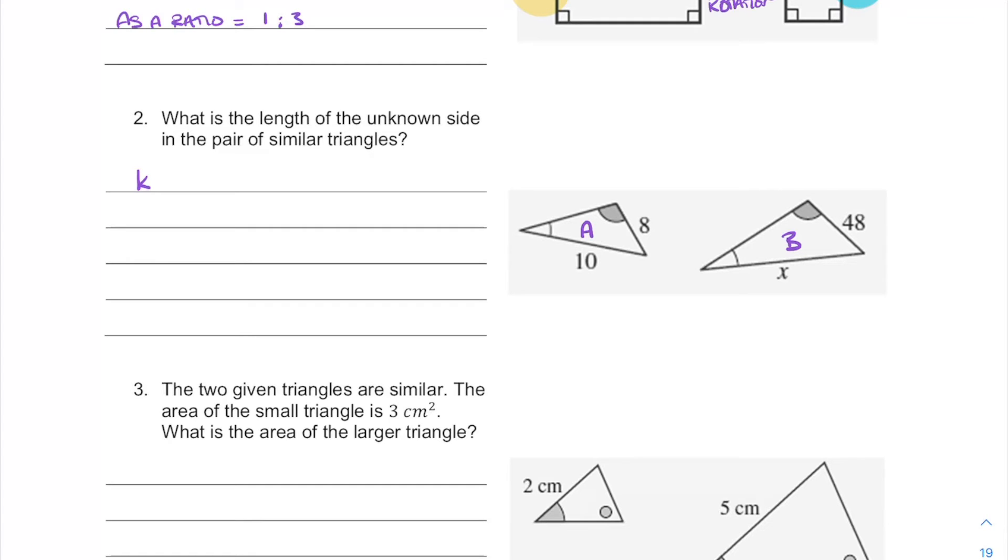Is going to be shape b over shape a. So this time we're going to look for our corresponding shapes. You can see they haven't been rotated at all, but we can see that this 48 corresponds with the 8. So we're going to use that in our fraction. Keeping in mind the idea of shape b being the numerator, shape a being the denominator gives us 48 over 8.